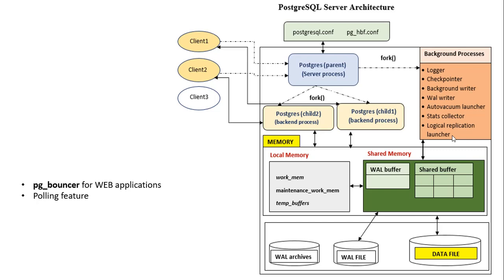Whenever we start the PostgreSQL server database cluster, the main PostgreSQL server process gets created, which was earlier known as the postmaster process, but that term was deprecated. This is the main process that gets created and will be running uniquely on your port number. This process internally runs other background processes for internal activities.